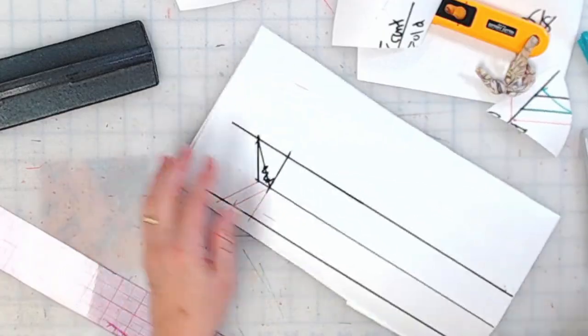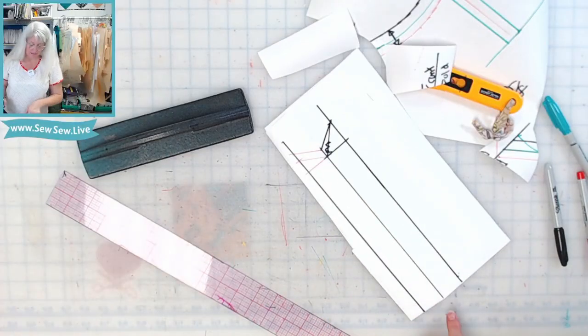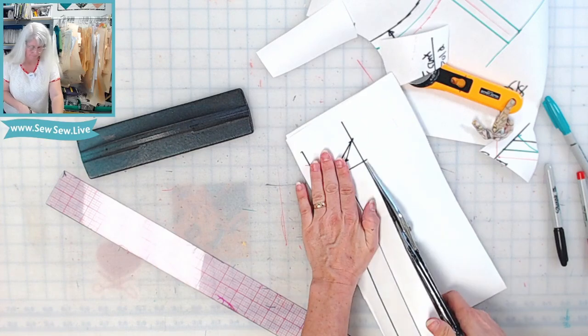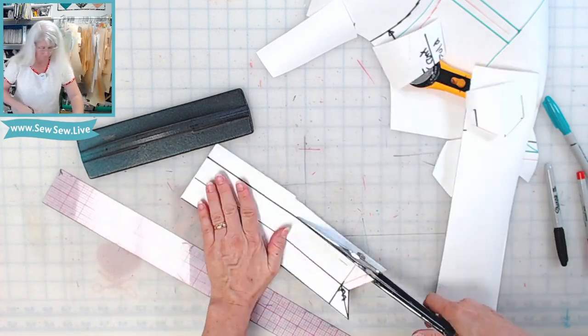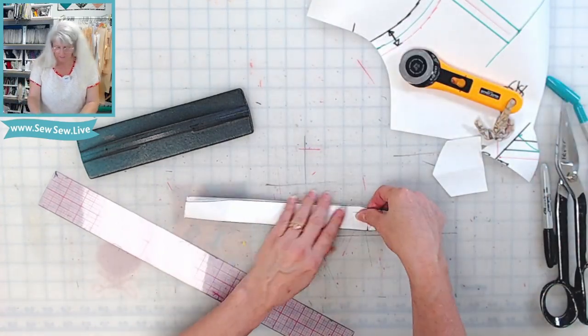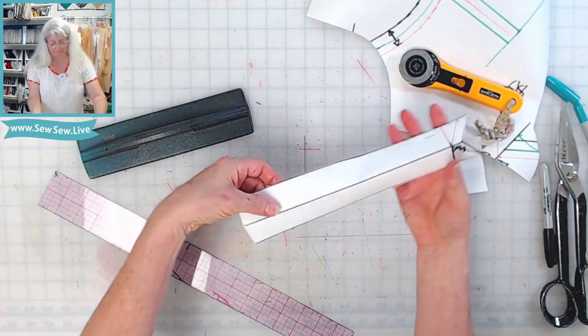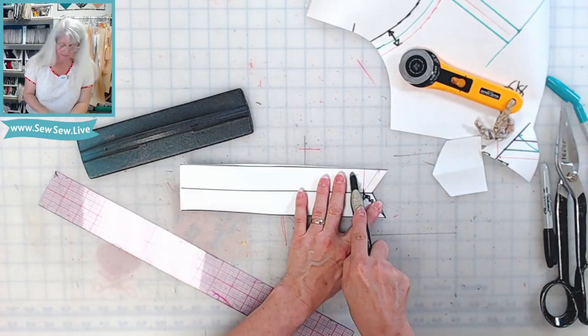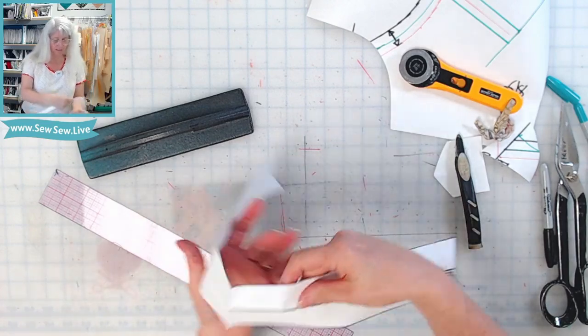So you're going to want to cut this out and then you're going to mark the center back neck right here. Let me cut mine out. And then you can double check that you actually got your angle right.